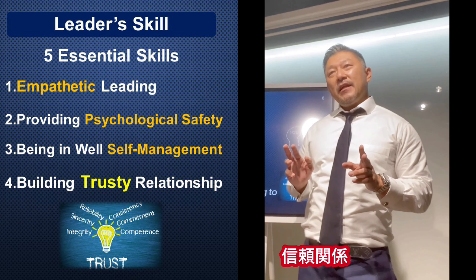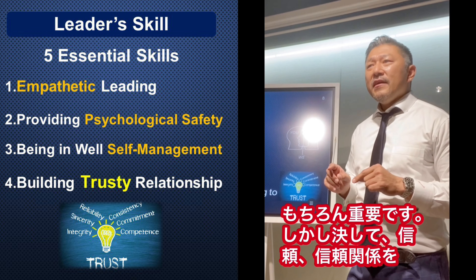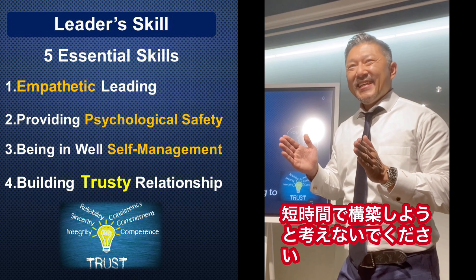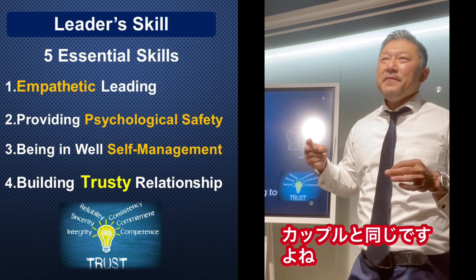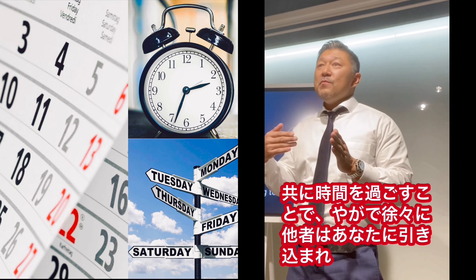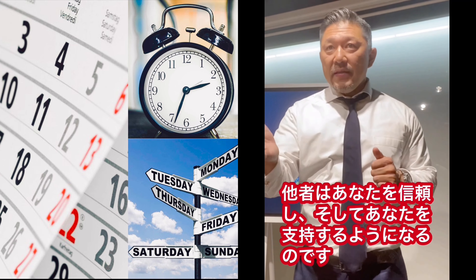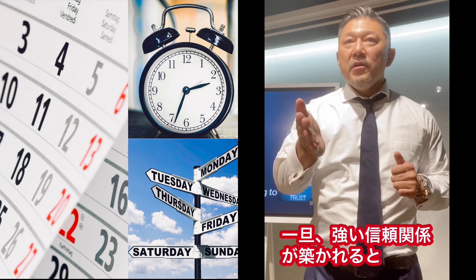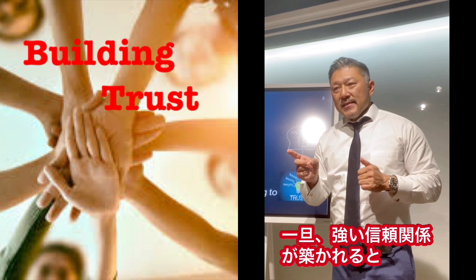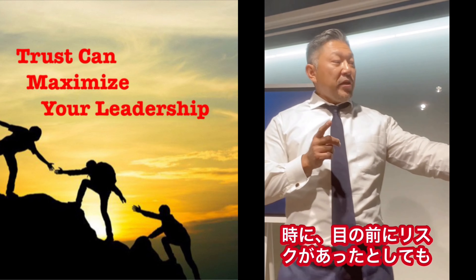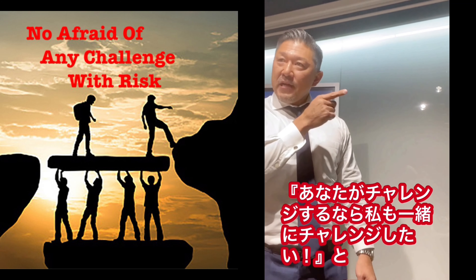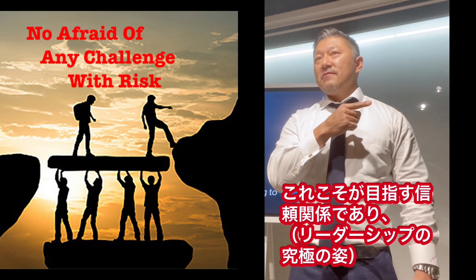Number four essential skill: trust relationship. Don't think you can create trust within a short time period - it's really difficult. Same as a couple, spending time gradually, people will be involved with you. People start trusting you, then people will follow you. Once strong trust is created, sometimes there is risk - but I want to challenge. What do you think? If you want to challenge, I will challenge together. This is based on trust.